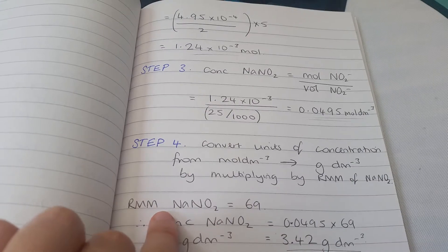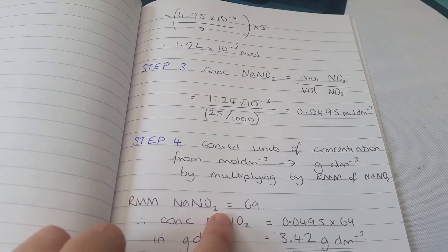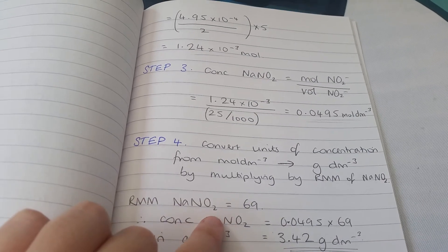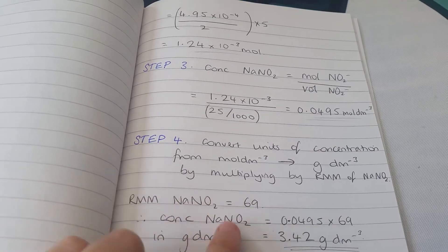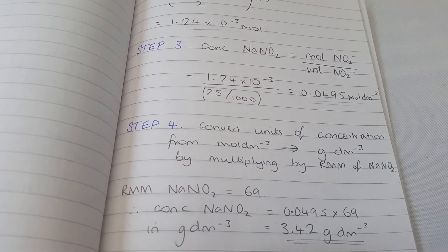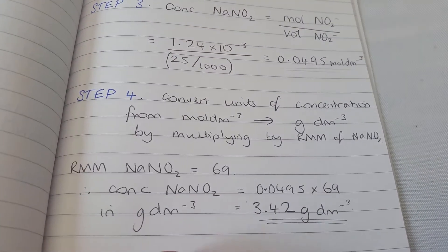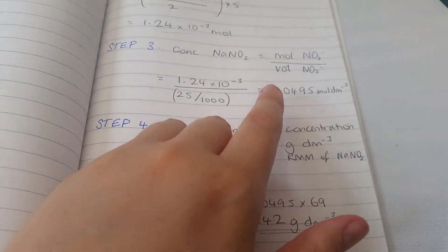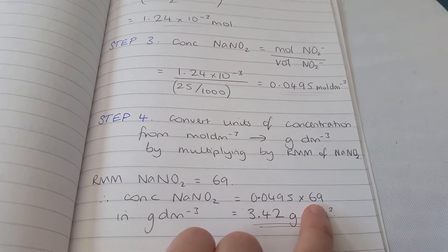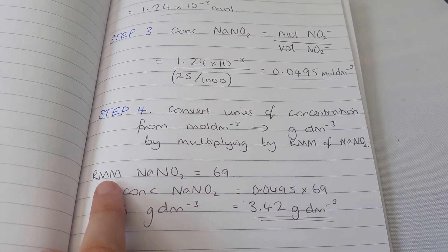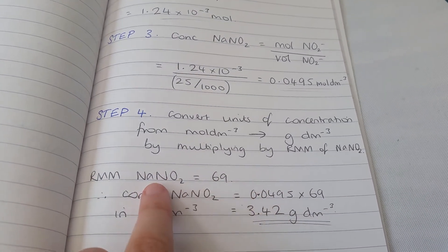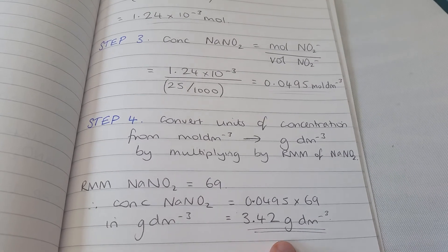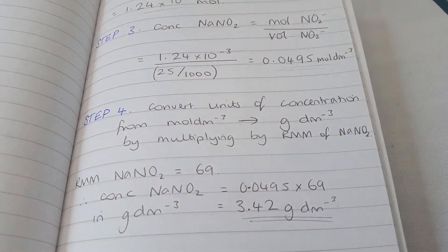Using a periodic table, add the atomic masses: 23 + 14 + (2 × 16) for the oxygen gives 69. Then multiply our concentration in mol/dm³ by this relative molecular mass of sodium nitrite to get the final answer of 3.42 g/dm³.